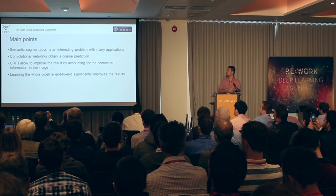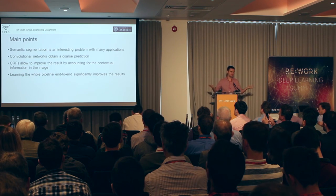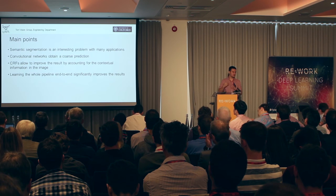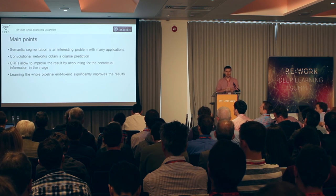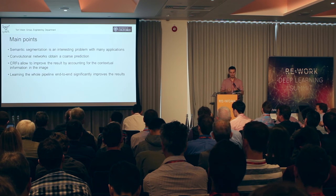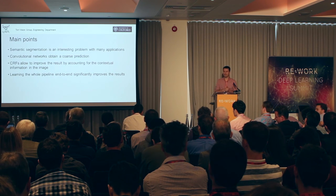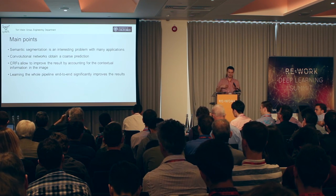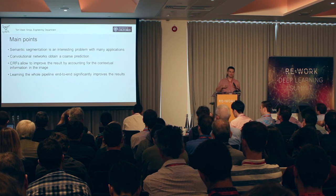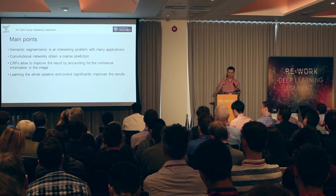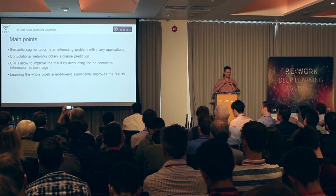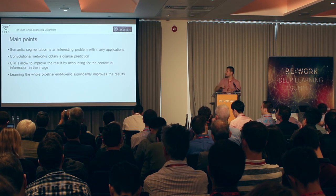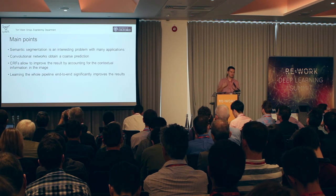That covers pretty much everything I wanted to say. The main points are: semantic segmentation is an interesting problem with many applications. Fully convolutional networks are a really good starting point but produce somewhat coarse predictions. Conditional random fields improve over that by introducing the prior knowledge that pixels close to each other with similar color intensity are likely to belong to the same class. And learning the whole pipeline end-to-end improves the results significantly.